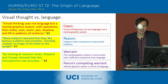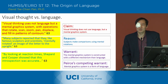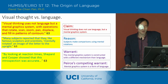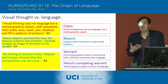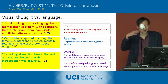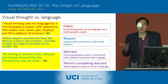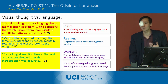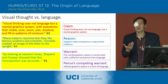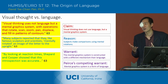Further evidence Pinker uses is actually similar to an example Peirce uses — a point where we can compare their warrants. He talks about visual thinking and claims that visual thinking doesn't use language, but a mental graphics system that's separate from language. He actually gives the same example that Peirce gave of letters being rotated around, and you can recognize or not recognize those letters based on this visual graphics system.